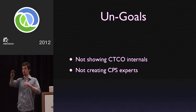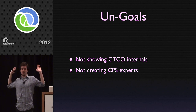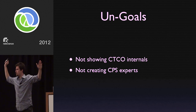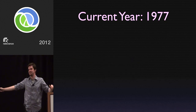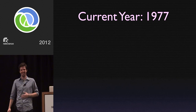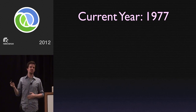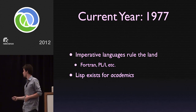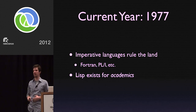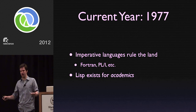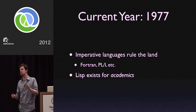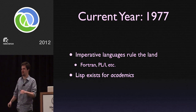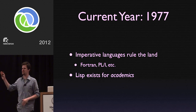So the first thing I need to do is imagine that this whole big room is a time machine, and we're going back to 1977. Unfortunately, I've brought you back to a time where everybody's using imperative languages. We've got a lot of Fortran, a lot of PL1, a lot of COBOL. But it's not all bad — we've got Lisp, although it's for academics, and nobody would ever build any big web-facing database-backed program in Lisp. That's just crazy.